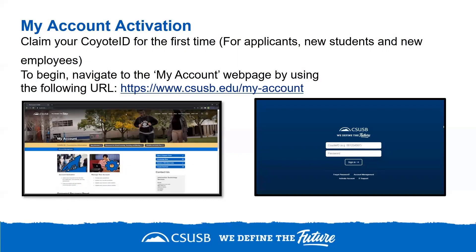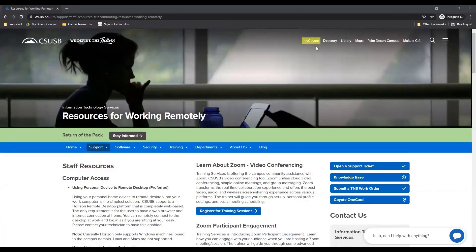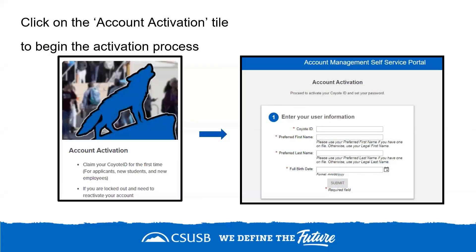Now we are ready to begin with the activation process. Before you activate your account, you'll first need to claim your account. Navigate to the MyCoyote account web page using the following URL. You may also select the MyCoyote link at the top of the page. Click the account activation tile to begin the activation process, then provide your information on the account activation page.